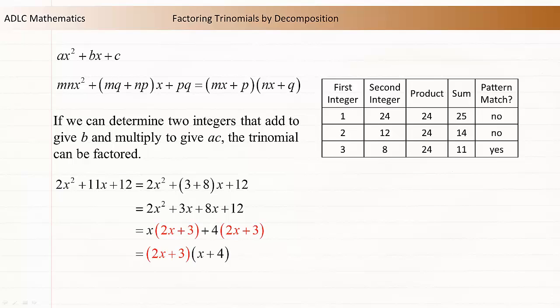The 2x + 3 can be removed as a common factor. So 2x² + 11x + 12 can be factored as (2x + 3)(x + 4).